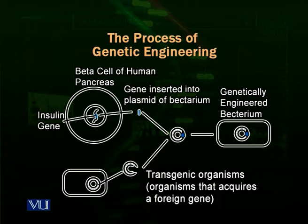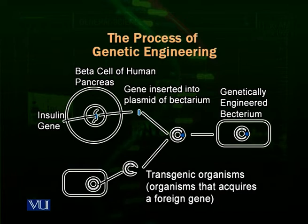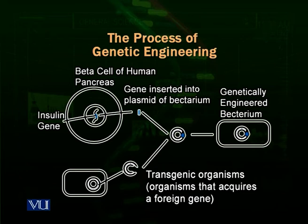Let us look at this diagram, which shows the process of genetic engineering briefly. Human insulin is a very important molecule. People with type 1 diabetes mellitus cannot produce insulin and must receive it externally. This insulin was initially produced from pigs — porcine insulin — or buffaloes — bovine insulin — but these were costly and could cause allergic reactions because they were not human insulin. Biologists solved this problem with the help of biotechnology.